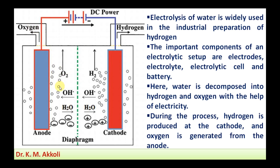The splitting of water molecules initially produces OH and H ions, which later form into hydrogen and oxygen. I will discuss these reactions in detail later. In this way, by using electricity we split water into hydrogen and oxygen molecules.